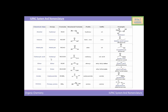For acetic acid, carboxyl is the functional group, prefix is carboxy, and suffix is -oic acid. In diethyl ether, ether is the functional group, prefix is alkoxy, and suffix is alkyl alkyl ether. For ethyl butyrate, ester is the functional group and suffix is alkyl alkanoate. For acetamide, carboxamide is the functional group, prefix is carboxamido, and suffix is -amide. For methylamine, primary amine is the functional group, prefix is amino, and suffix is -amine.